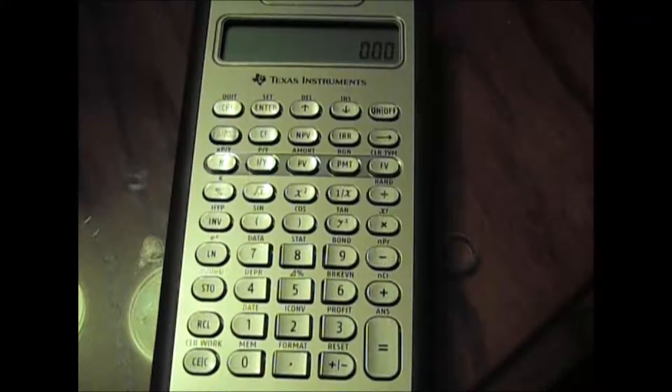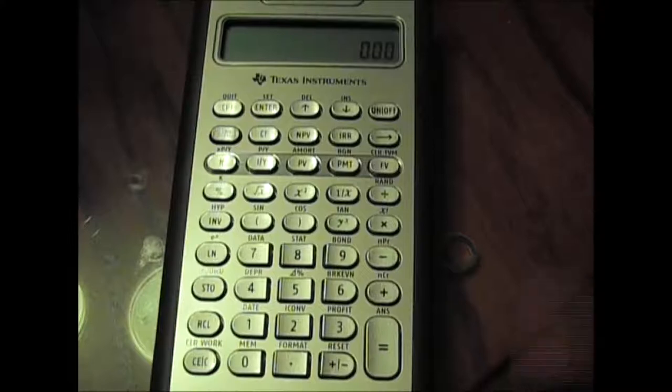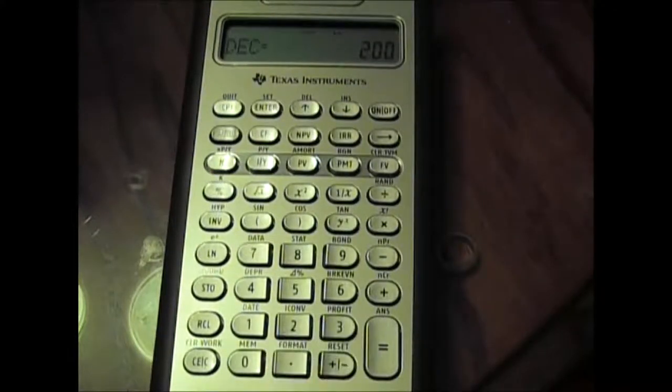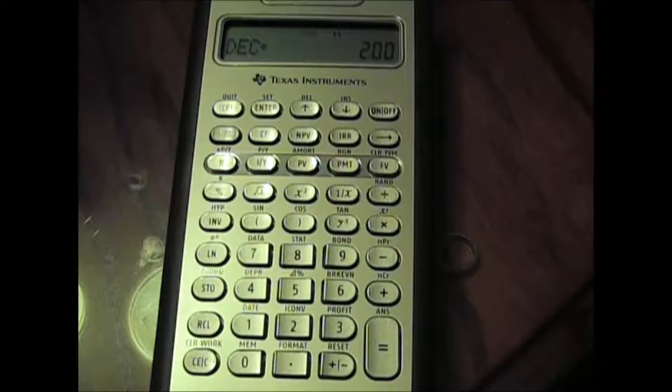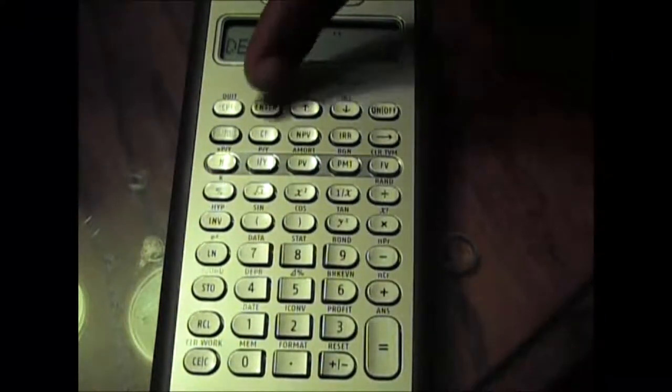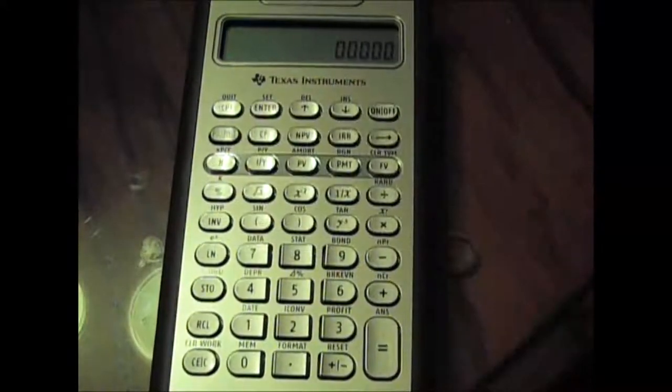Then zero it out. You see 0.00. But I want to set it back to 4. Hit the second key, decimal point. You should see DEC equals 2. Hit the number 4 and the word ENTER. Zero it out. Now I have my four decimal places.